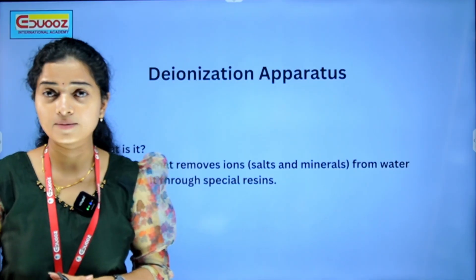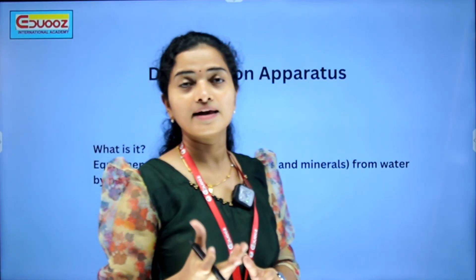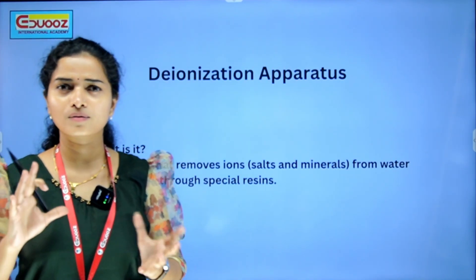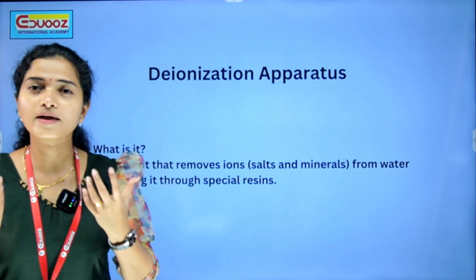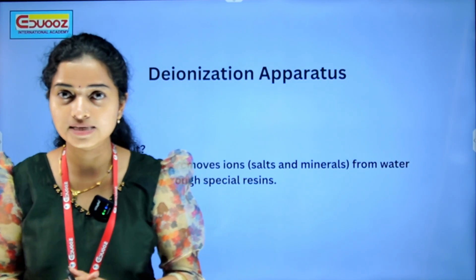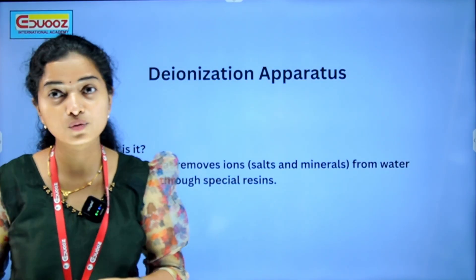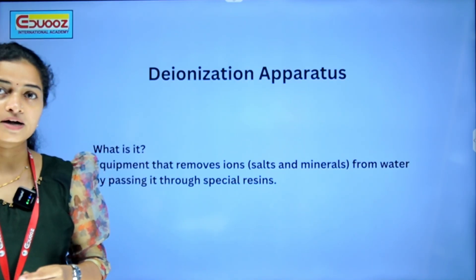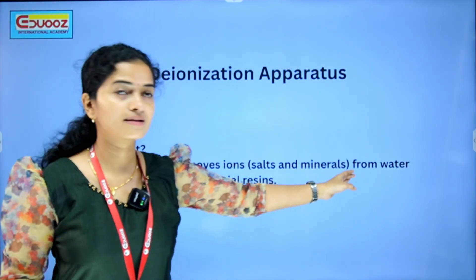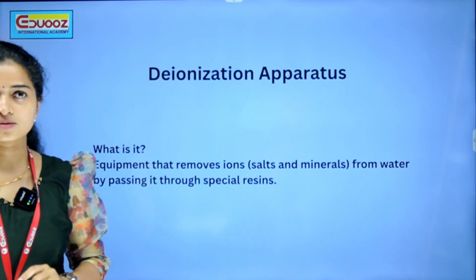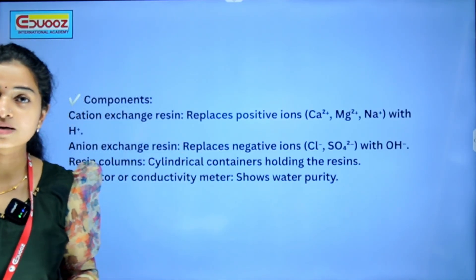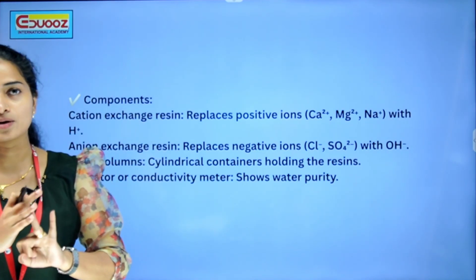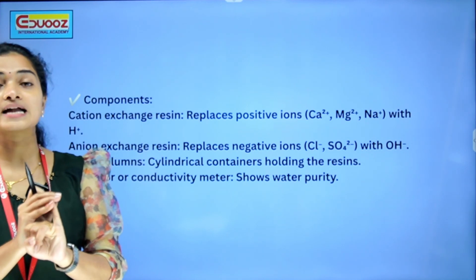Now, deionization. What is deionization? When we say it is water, there are some ions. We can remove them — like cations and anions, such as salts and minerals. The deionization equipment removes ions, salts, and minerals from water by passing it through special resins. We can remove these ions.